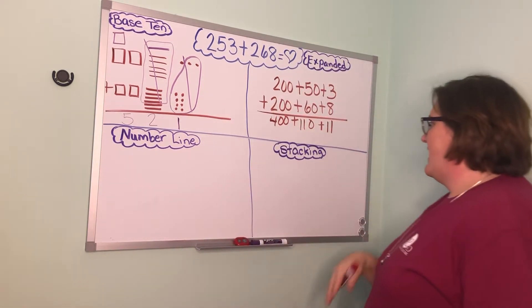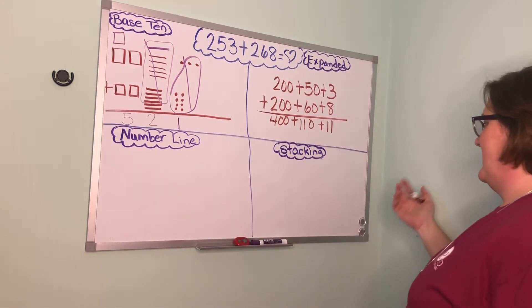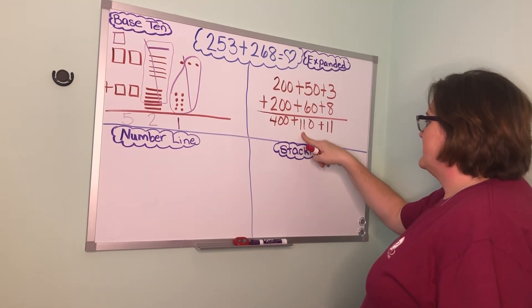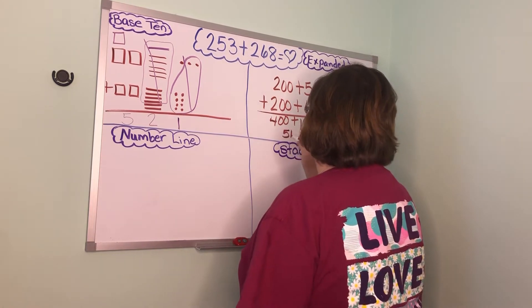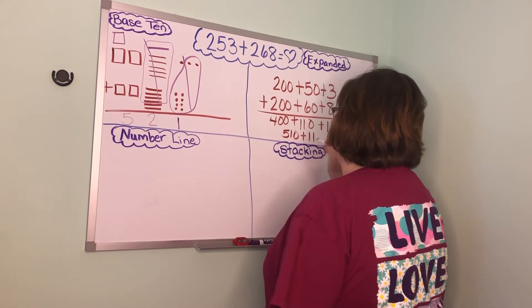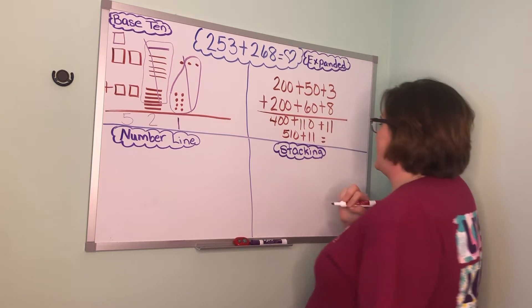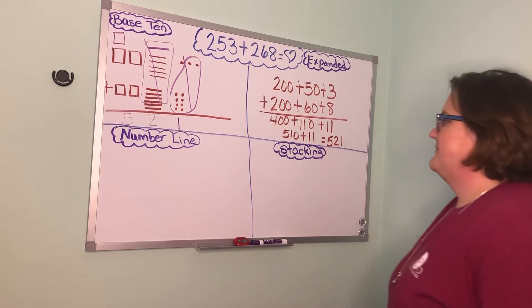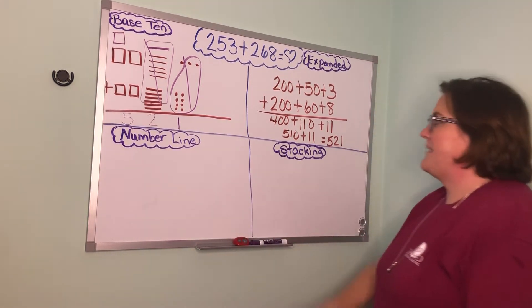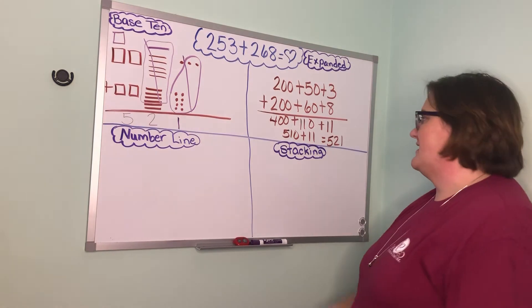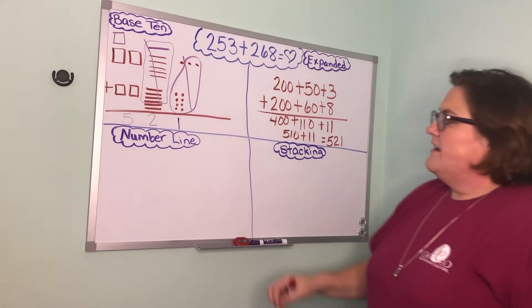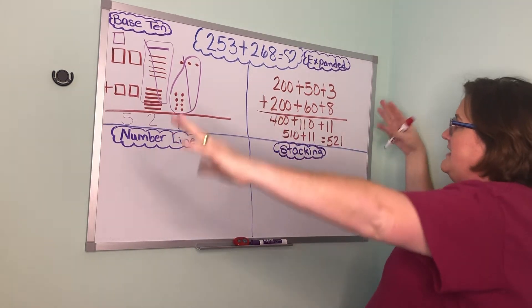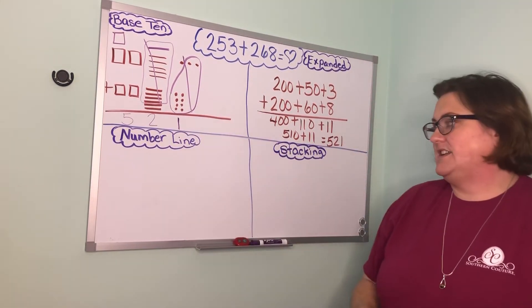All right now I'm ready to start adding up. So I can look right here and I see 400 and 110. That gives me 510 plus 11. So when I add that up that gives me 521. So you see we're getting the same answer. No matter what strategy you use you should get the same answer. Remember this expanded form strategy can be a little tricky but if you like seeing it all broke down like that it's a great strategy to use.